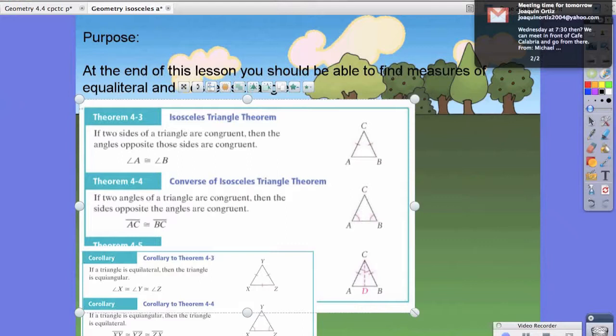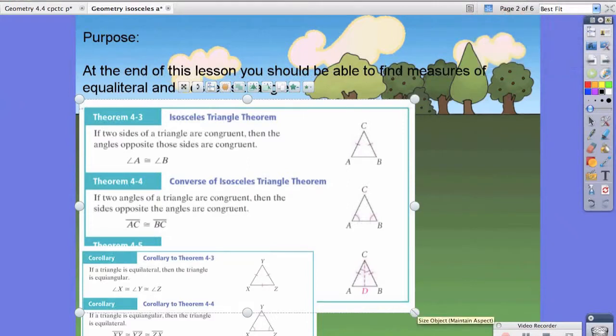it says that triangle ACB is isosceles, which means that AC and CB are congruent because it's marked. That means angle B and angle C are congruent. The converse of the isosceles triangle theorem